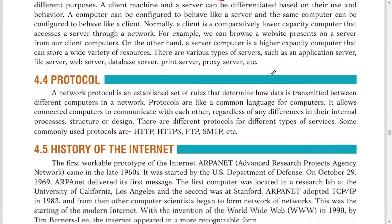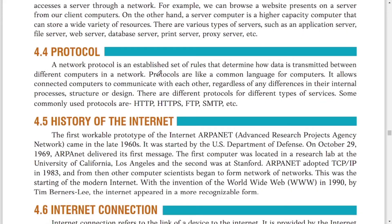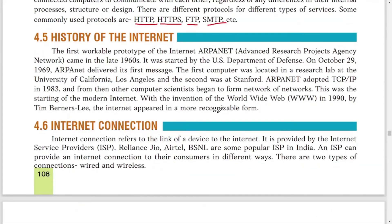Protocols are the rules which must be followed while transferring information on a network. There are different protocols: HTTP (Hypertext Transfer Protocol), HTTPS (Hypertext Transfer Protocol Secure), FTP (File Transfer Protocol), and SMTP (Simple Mail Transfer Protocol). HTTP and HTTPS are mainly used for websites — HTTP without security and HTTPS with security, where information is converted into unreadable code so no one in the middle can read it. FTP is mainly used to transfer files, and SMTP is used to send emails.